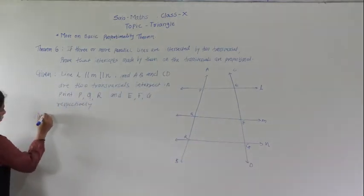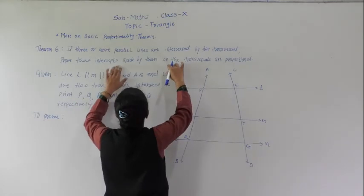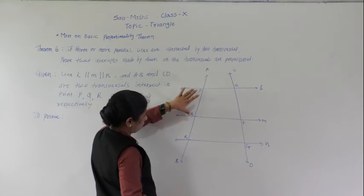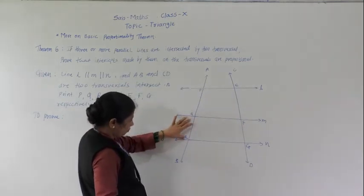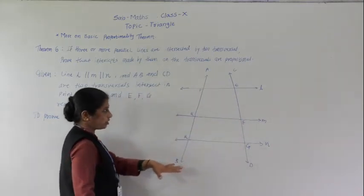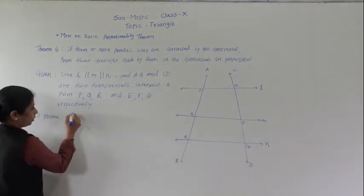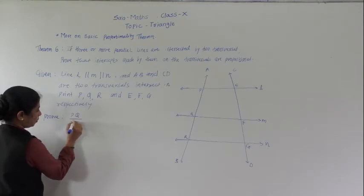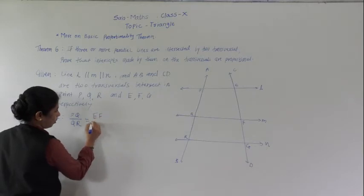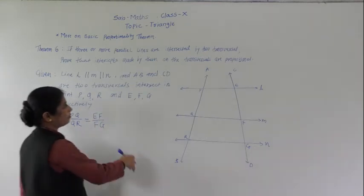To prove: the intercepts PQ, QR and EF, FG are proportional, i.e., PQ upon QR equals EF upon FG.